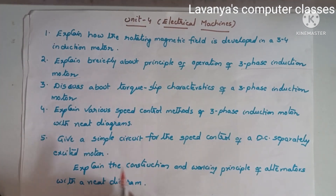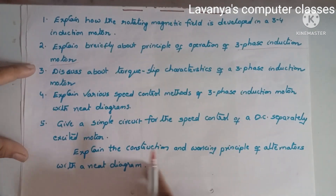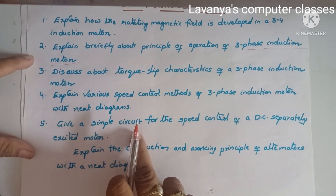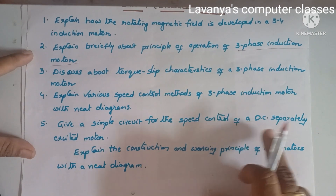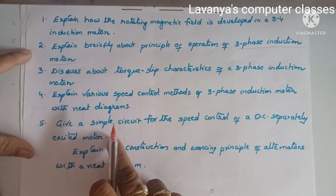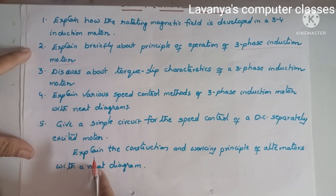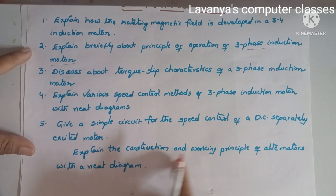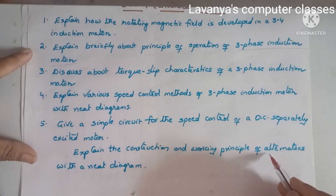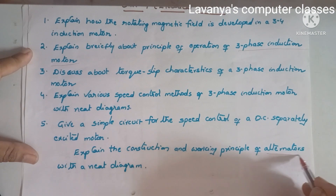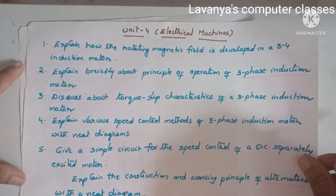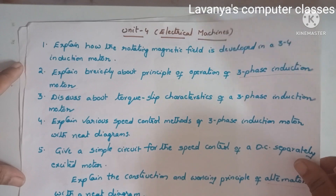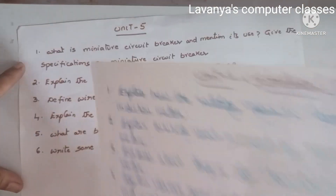Explain various speed control methods of a three-phase induction motor with a neat diagram — explain everything with diagrams wherever they are needed. Fifth: give a simple circuit for the speed control of a DC separately excited motor. Sixth: explain the construction and working principle of alternators with a neat diagram. These are the important questions in Unit 4.